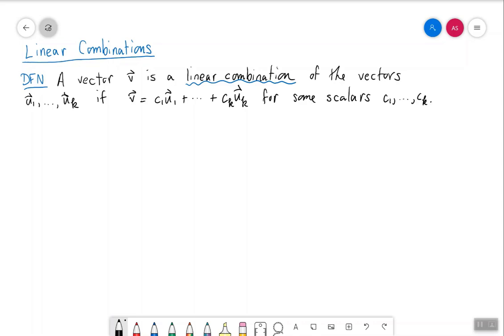In other words, a linear combination of u1 through uk is anything you can get from them by using only the operations of vector addition and scalar multiplication.